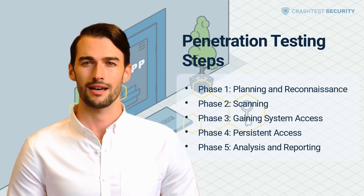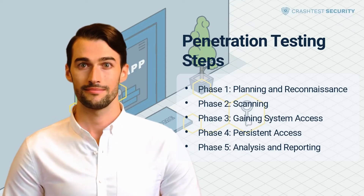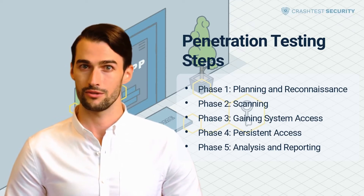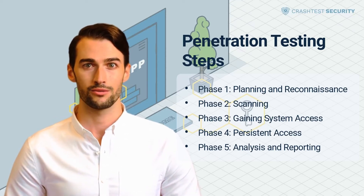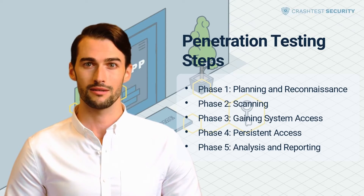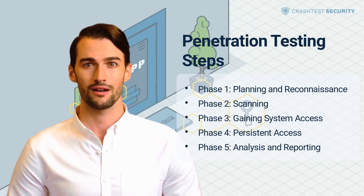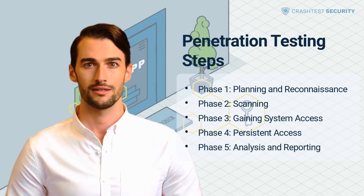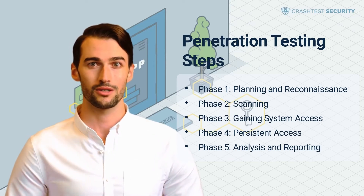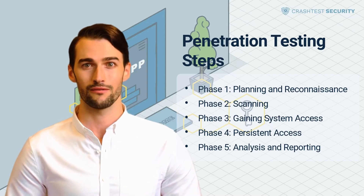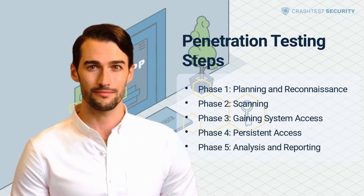Phase 2: Scanning. Based on the findings of the planning phase, penetration testers use scanning tools to explore the system and network weaknesses. This pentest phase identifies the system weaknesses potentially exploited for targeted attacks. It is essential to obtain all this information correctly, as it will define the success of the following phases.